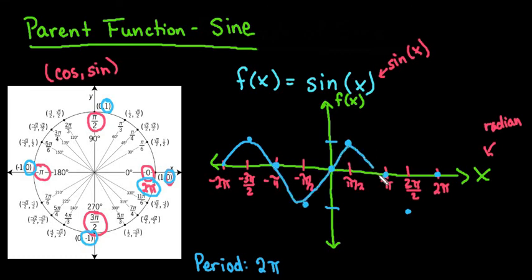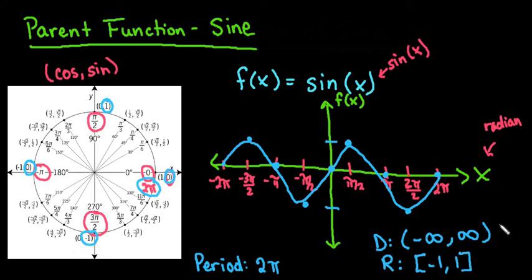You could draw the arrows to say that it continues on, because my domain for this is always going to be all real numbers, so negative infinity to positive infinity. And my range is always going to be from my lowest point to my highest point, inclusive, so from negative 1 to positive 1 would be the range of my sine wave.